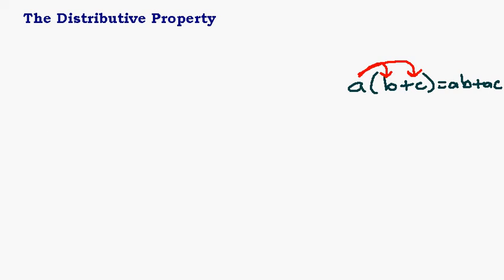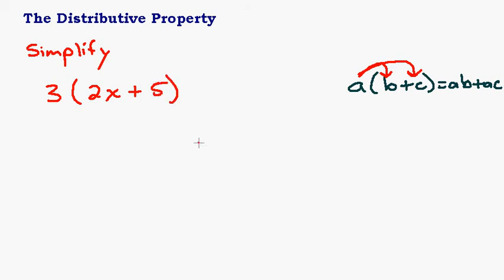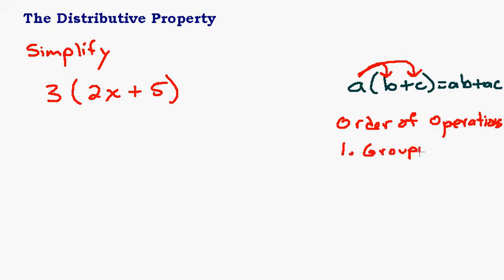Let's simplify the expression three times two x plus five. We're going to use the distributive property to do that. But before we do, some of you are going to look at this and say I need to do what's in the parentheses first — order of operations. The first thing you do is any grouping symbols, which most of the time means parentheses: do what's inside the parentheses first.